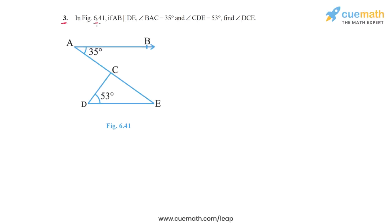Question 3 says in figure 6.41, if AB is parallel to DE, and angle BAC is equal to 35 degrees, angle CDE is 53 degrees, find angle DCE.